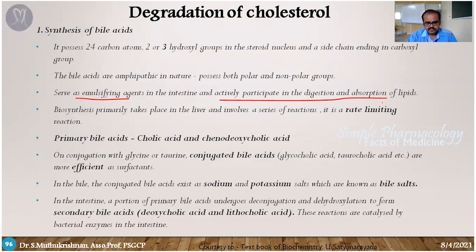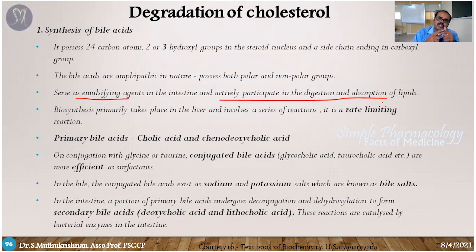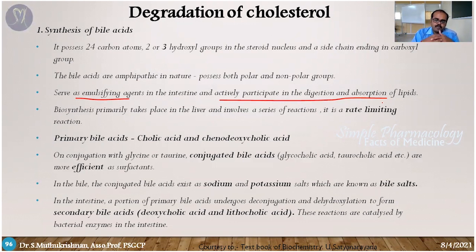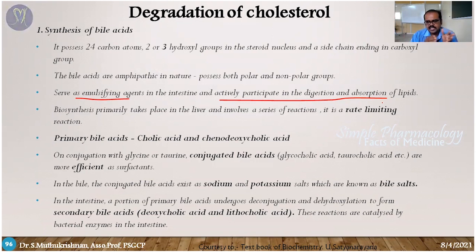Once these bile substances reach the intestine, the primary bile acids undergo deconjugation and dehydroxylation. The liver releases bile through the gallbladder for cholesterol absorption and emulsification. The remaining bile acids that are not reabsorbed are eliminated in feces. In the intestine, deconjugation and dehydroxylation convert primary bile acids into secondary bile acids.